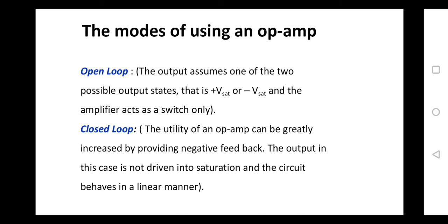The applications of an op-amp in open loop configuration include voltage comparator, zero crossing detector, and so on. To increase the utility of an op-amp, instead of using it in open loop configuration, we use it in closed loop configuration, in which the output is fed back to the input with negative feedback. By providing a feedback path from output to input, the op-amp will not be driven into saturation and can be operated in a linear mode.